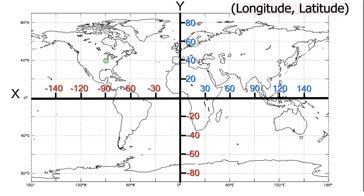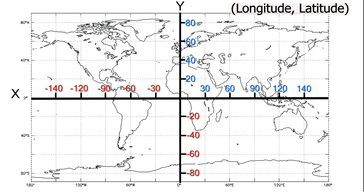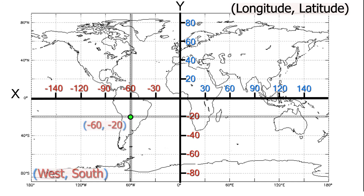In quadrant 2, we see a point in North America which shows negative 90 degrees west and 40 degrees north. In quadrant 3, we see a point in South America at negative 60 degrees west and negative 20 degrees south.